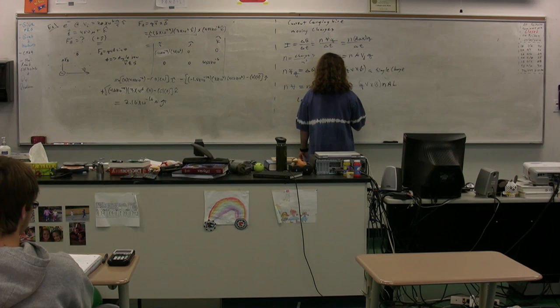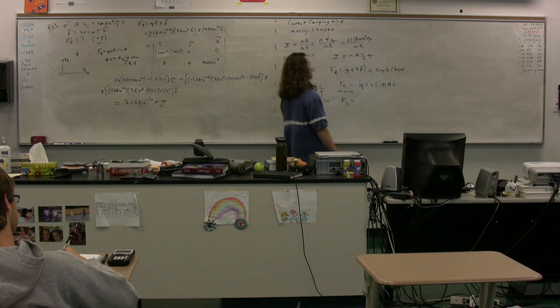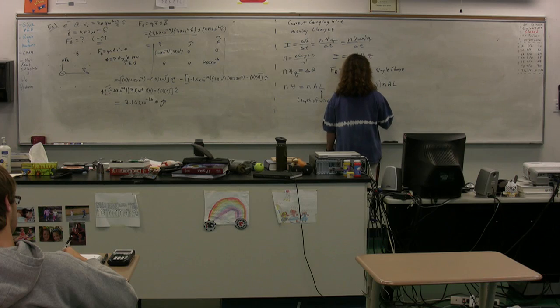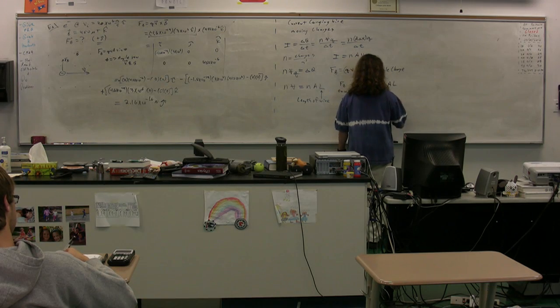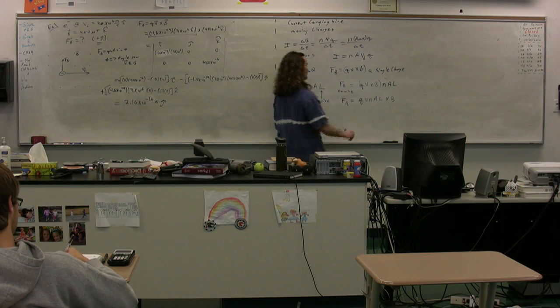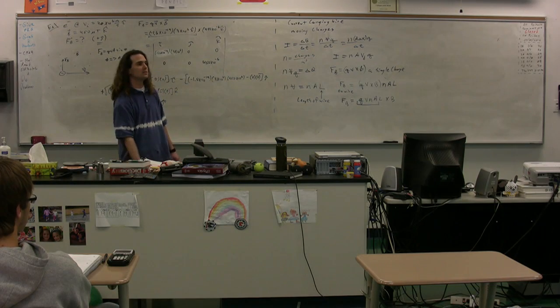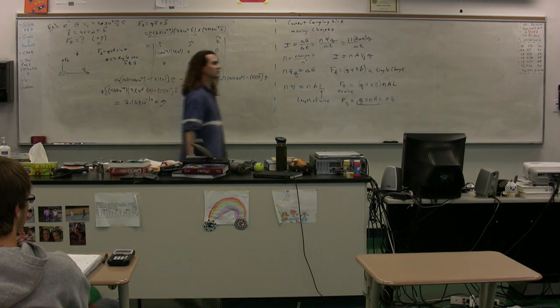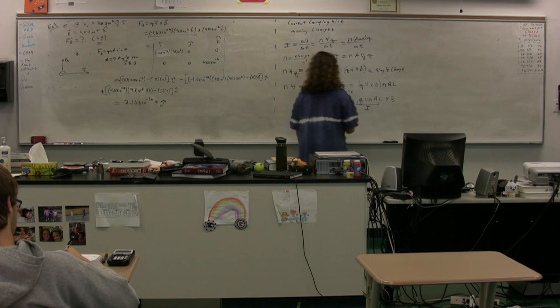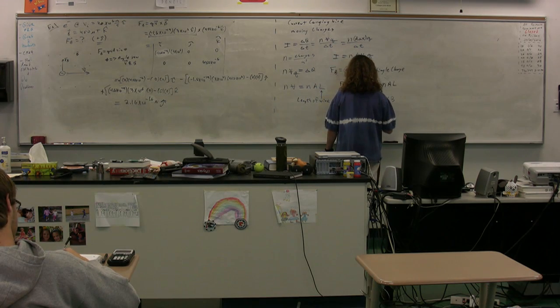So if we multiply through, we get the magnetic force is equal to, these are all scalars, so we can multiply them through by any one of these. So let's just do q v times n times A times L cross B. What's that? We just showed that that is the current. In other words, the magnetic force on a current-carrying wire is I L cross B.